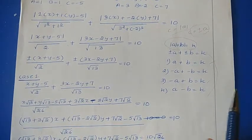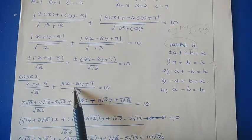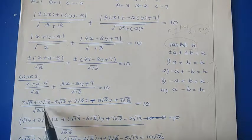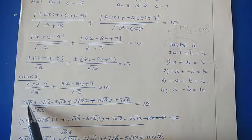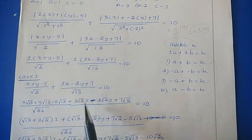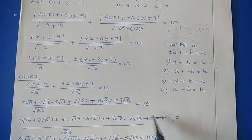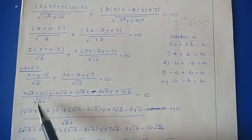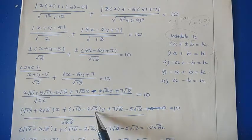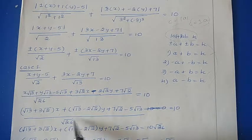Case 1: taking both values as positive. So (x+y-5)/√2 + (3x-2y+7)/√13 = 10. Taking LCM as √26 and multiplying through: √13·x + √13·y - 5√13 + 3√2·x - 2√2·y + 7√2, divided by √26, equals 10. Grouping x terms and y terms: (√13+3√2)x + (√13-2√2)y + (7√2-5√13) divided by √26 equals 10.